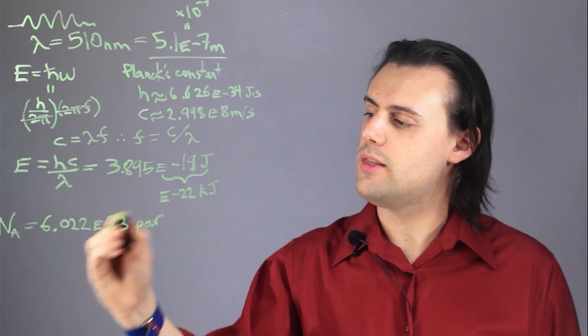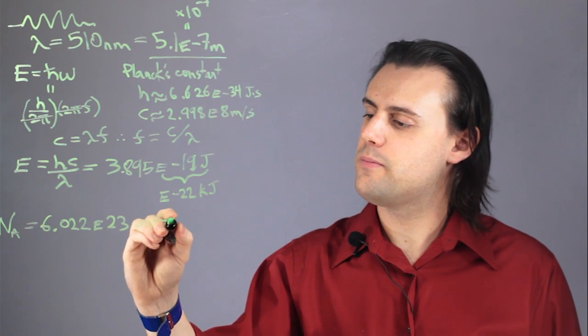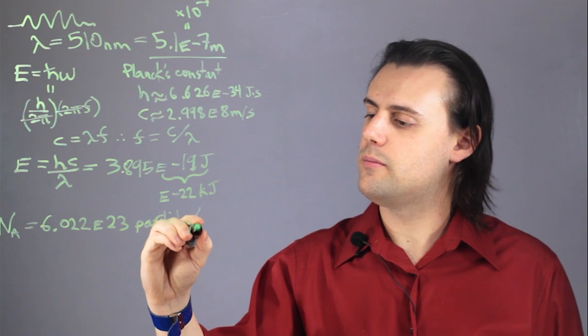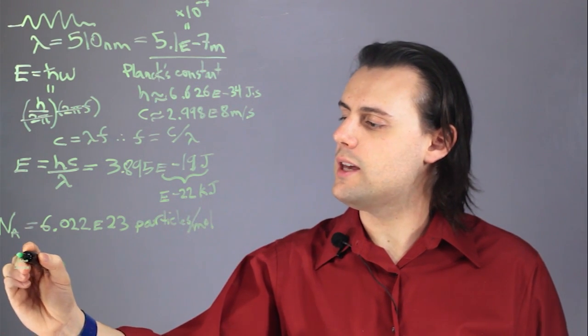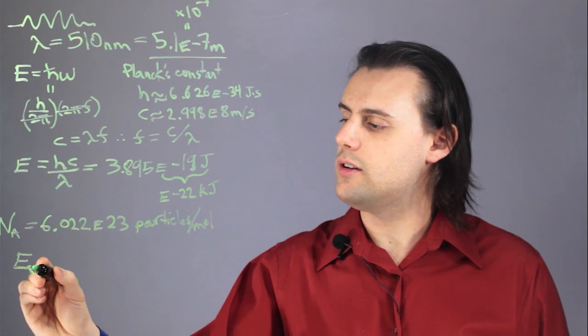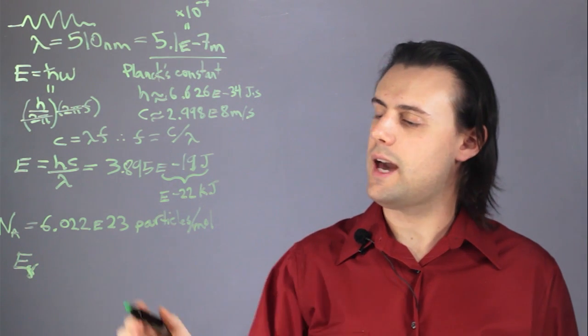So if I multiply the energy of my photon, denoted by this Greek letter gamma, with Avogadro's number,